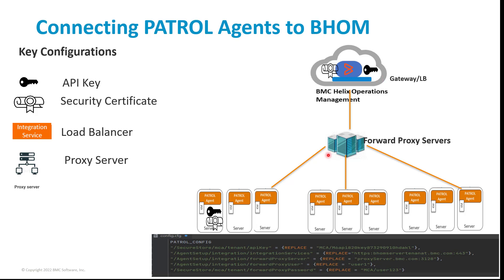Another additional configuration that is part of this migration is the proxy server. You can set up a proxy server in your infrastructure so that the PATROL agents can communicate with BMC Helix Operation Management via the proxy server. This creates an additional layer of security and avoids establishing direct communication from target servers to BHOM. All these details help establish a layer of secure communication between agents running on the endpoint and the BHOM instance.